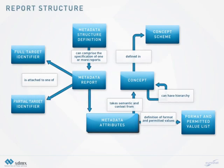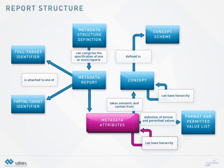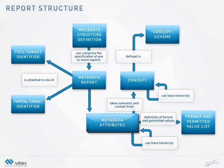The next step in defining a metadata structure definition is defining the structure of the metadata reports. This structure is described in one or more report structures. The content of a report structure are metadata attributes. A metadata attribute can comprise so-called child metadata attributes. In this way it is possible to define hierarchical structures of metadata attributes. In addition, each report structure is associated with a target identifier. A metadata attribute takes its semantic from a concept which is defined in a concept scheme. As with a dimension or a data attribute in a DSD, the metadata attributes can take a coded representation from a code list or define an uncoded text format.